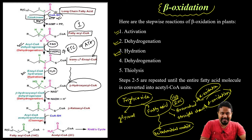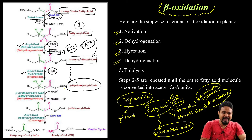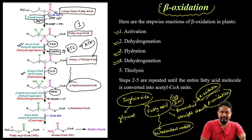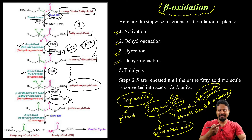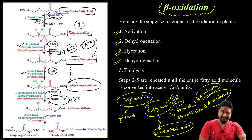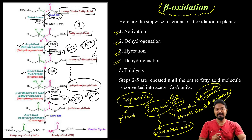Next is another dehydrogenation reaction — dehydrogenation means hydrogen loss. The hydrogen is not lost randomly; here it converts into NADH. NADH is important because NADH is an energy molecule. So NADH finally goes to apply — ATP synthesis occurs.